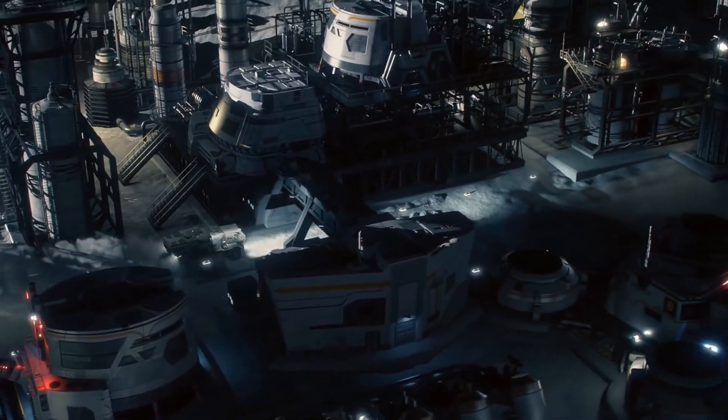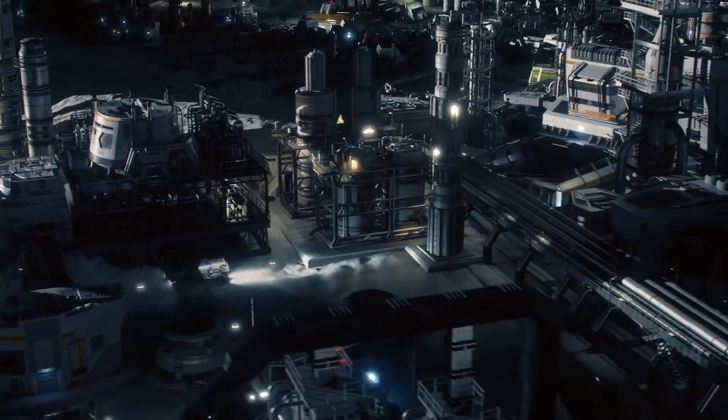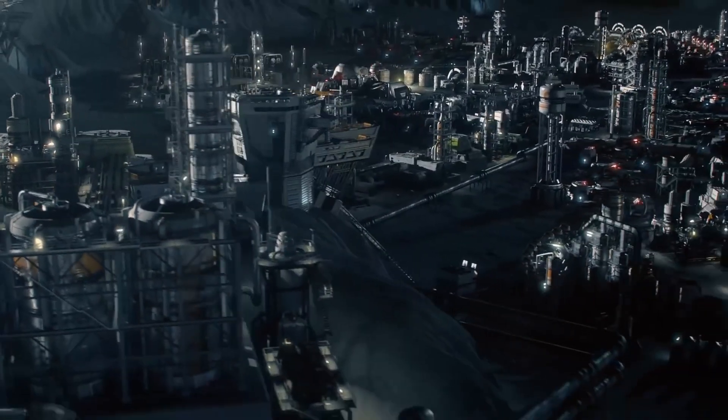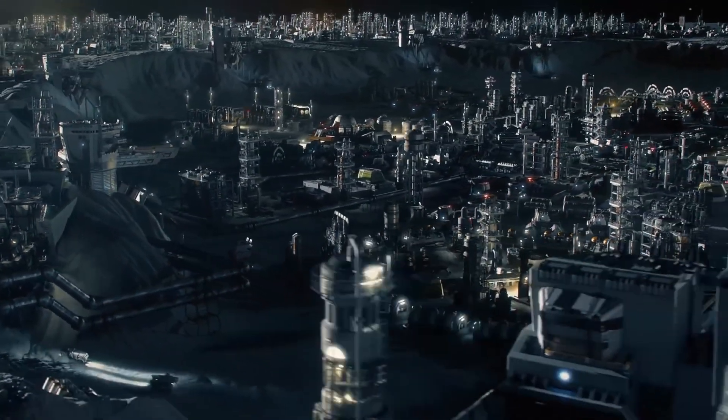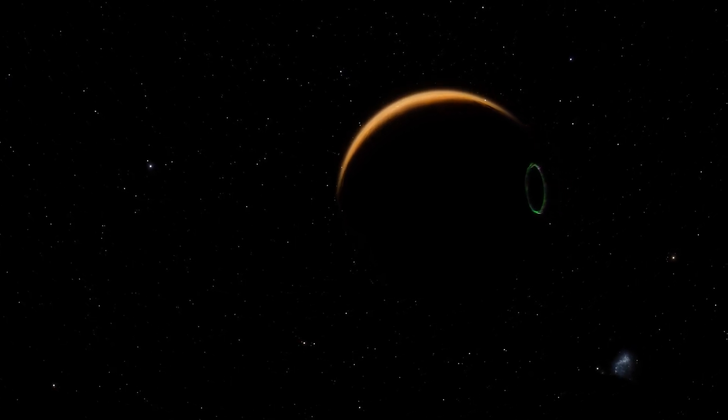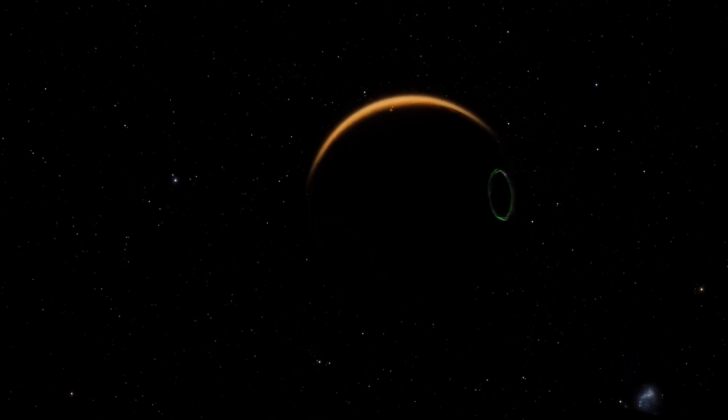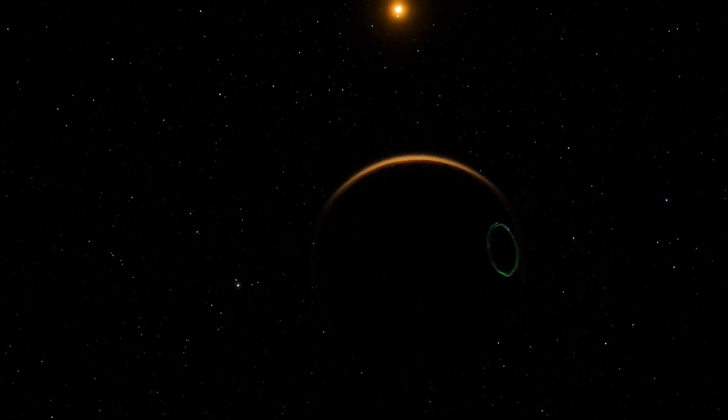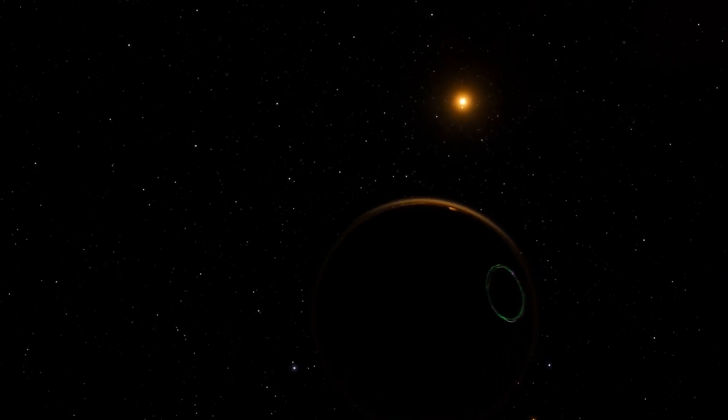By focusing on Proxima Centauri b, the closest exoplanet to Earth, the telescope revealed the presence of unusual bright lights emanating from its surface. What could be the cause of these unusual lights on Proxima Centauri b? Could they indicate the existence of life beyond our own planet?